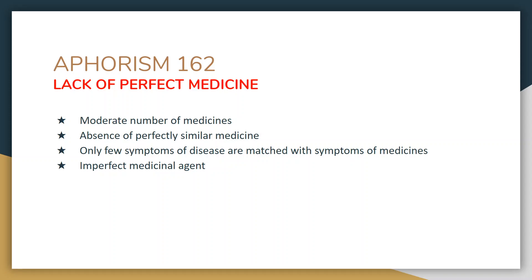Hello students. We continue our discussion on aphorism number 162. Dr. Hahnemann is taking a different aspect — a different situation where there is a lack of perfect medicine. Aphorism 162 onwards starts the discussion when the homeopathic physician faces a situation where there is a lack of perfect medicine.